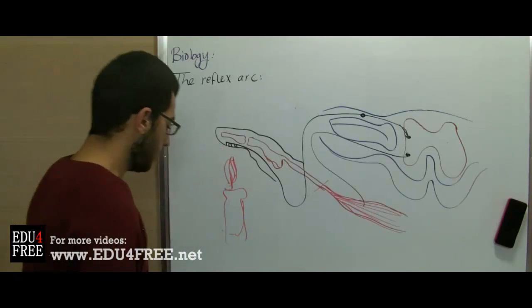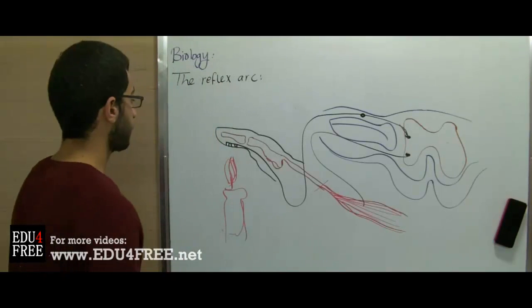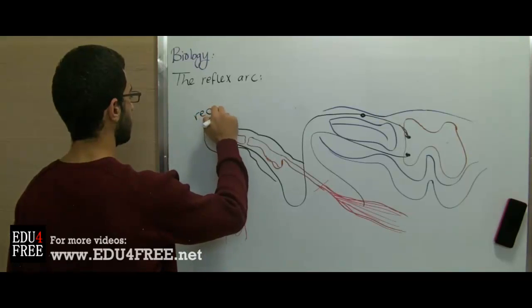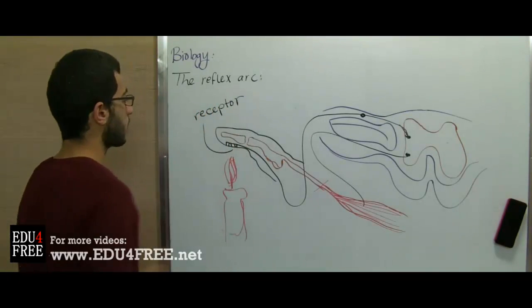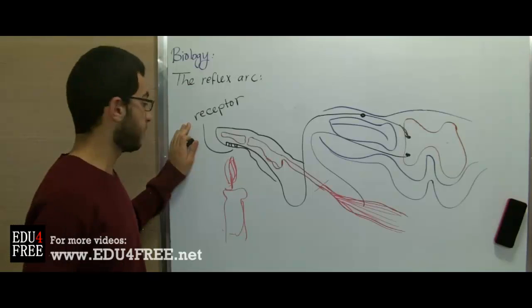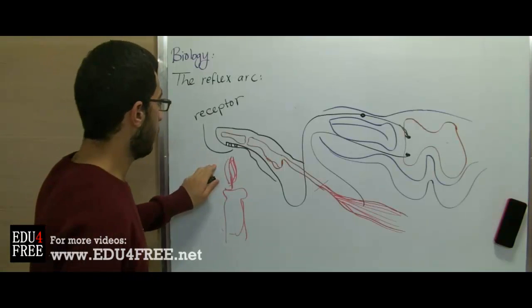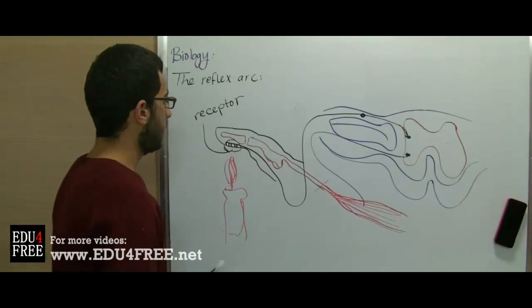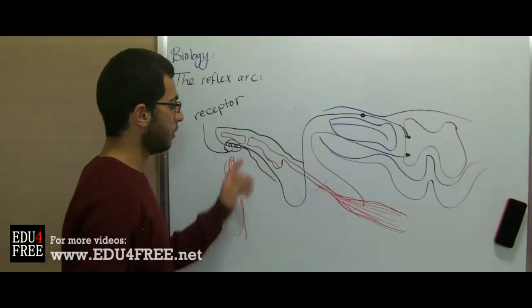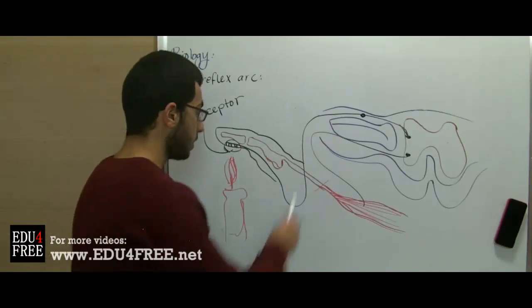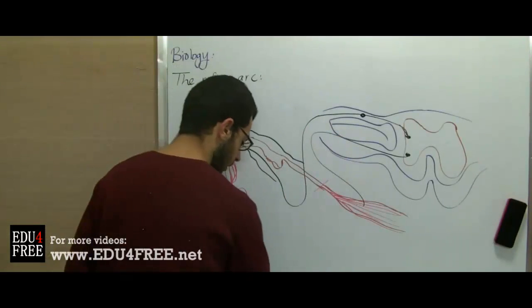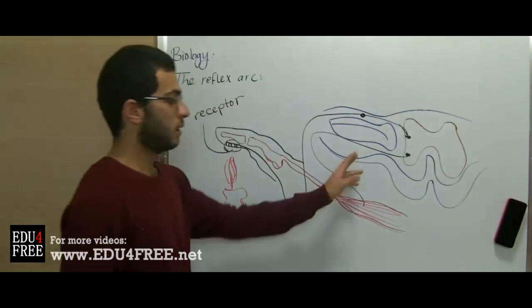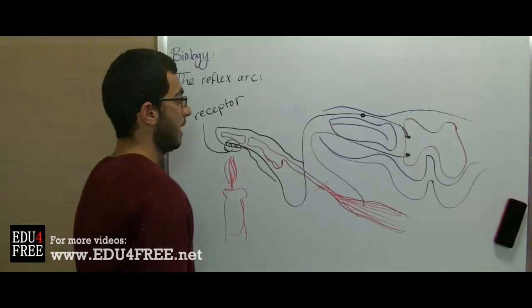So, first of all, the receptor here, or the sensory organ, feels the heat. So it receives this stimulus from that part, and then it transmits it through the nerve fibers till it goes to the dorsal root of the vertebra.